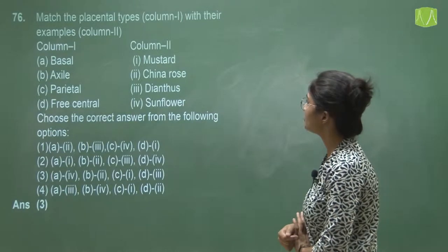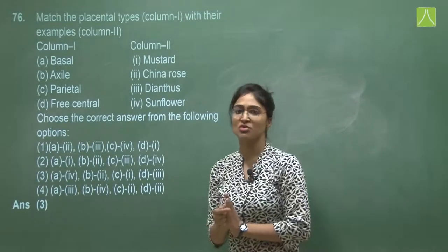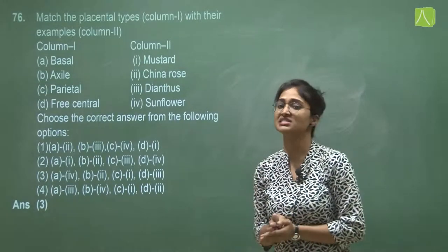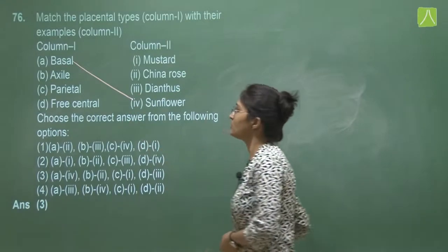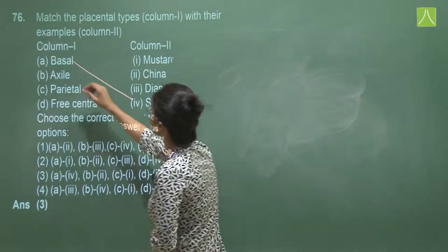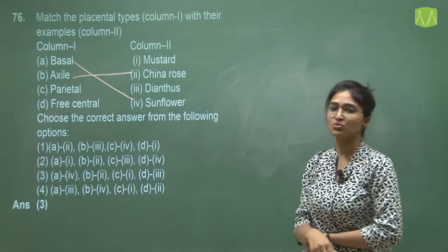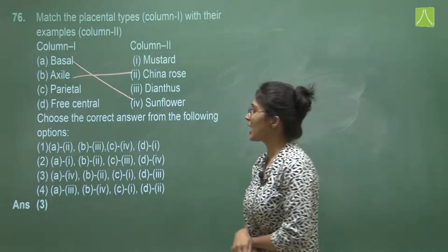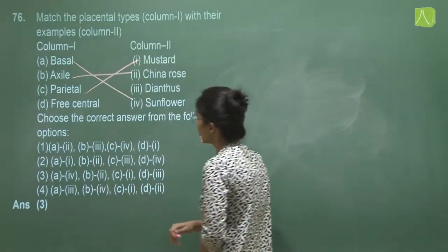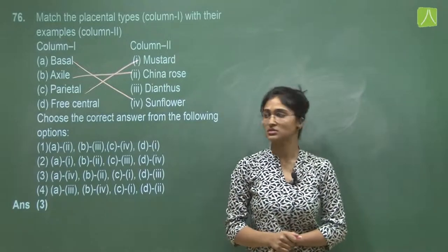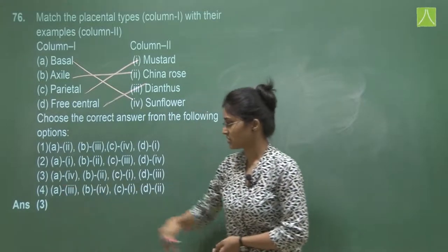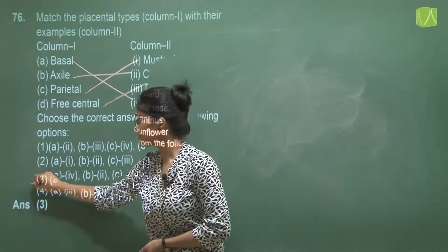Question 76 asks to match placental types in column 1 with their examples in column 2. Basal placentation is found in sunflower and marigold — A matches with 4 (sunflower). Axile placentation is found in China rose, tomato, and lemon — B matches with China rose. Parietal placentation is found in mustard, Argemone, and cucumber — C matches with mustard. Free central placentation is found in primrose and Dianthus — D matches with Dianthus. Only one option has A matching with 4, so the answer is option three.